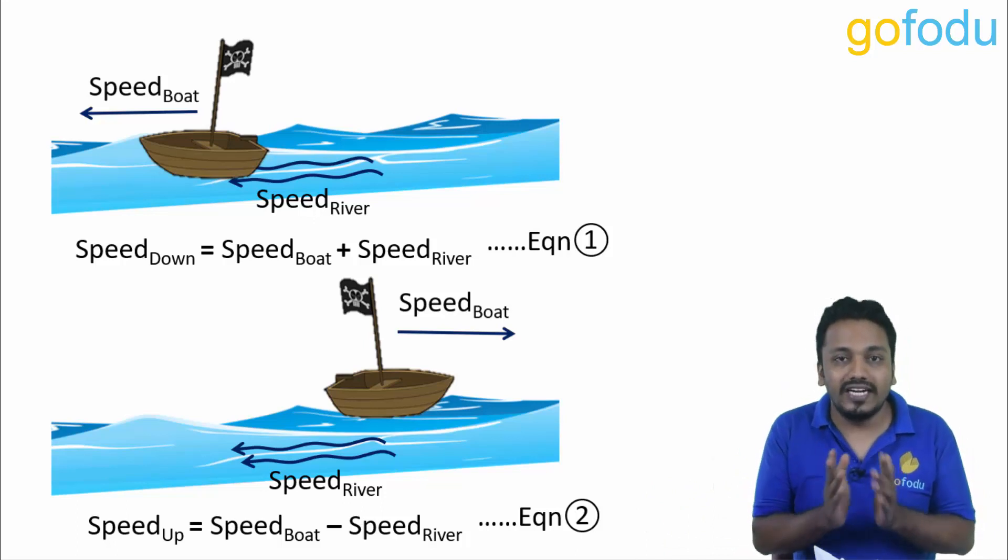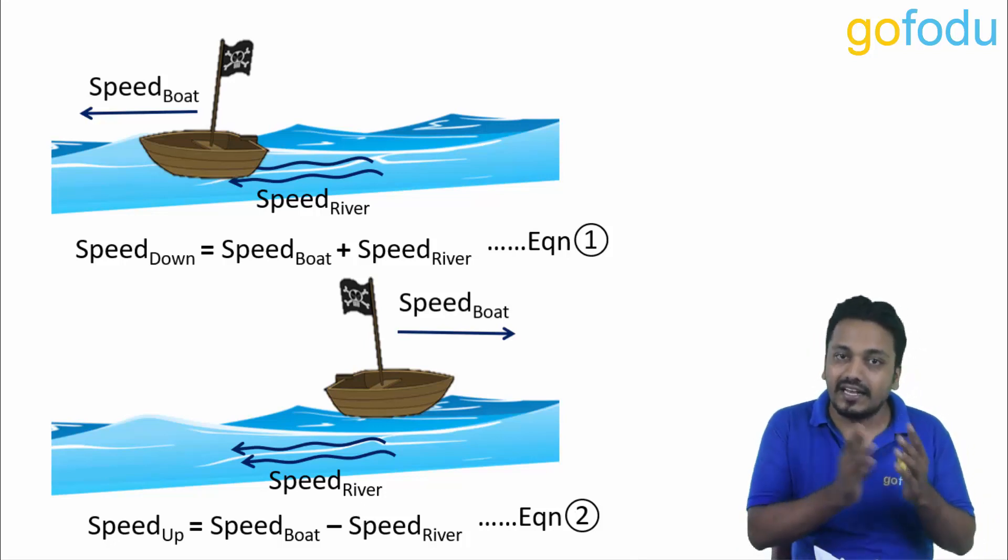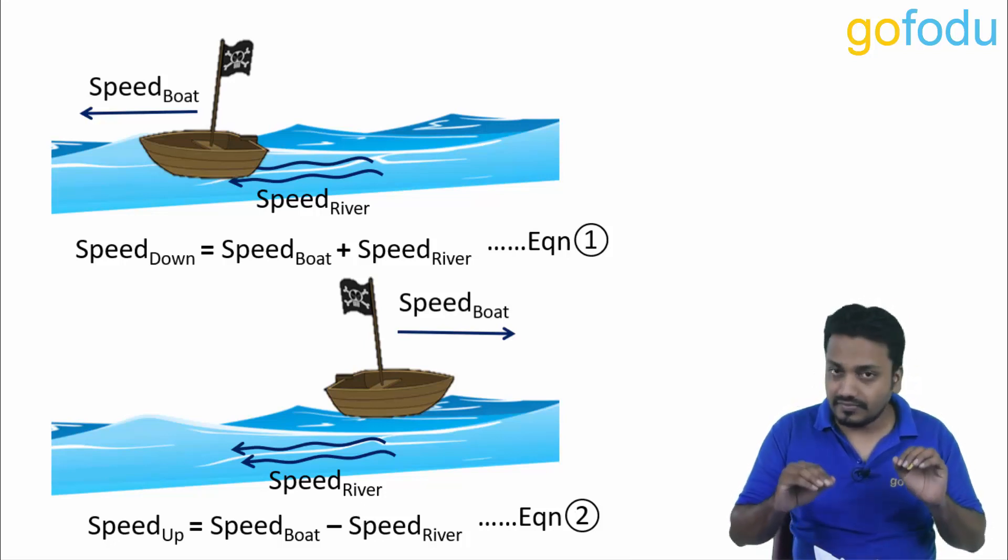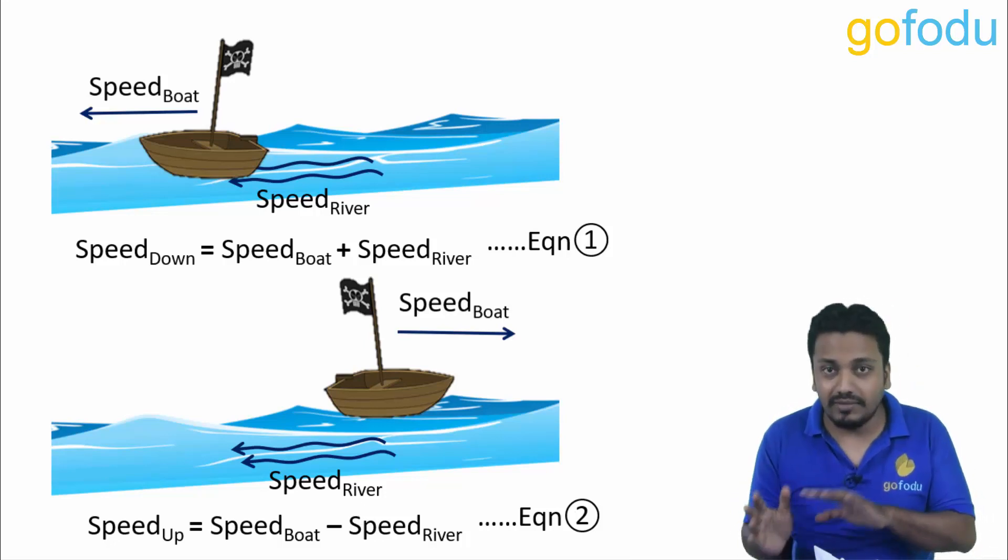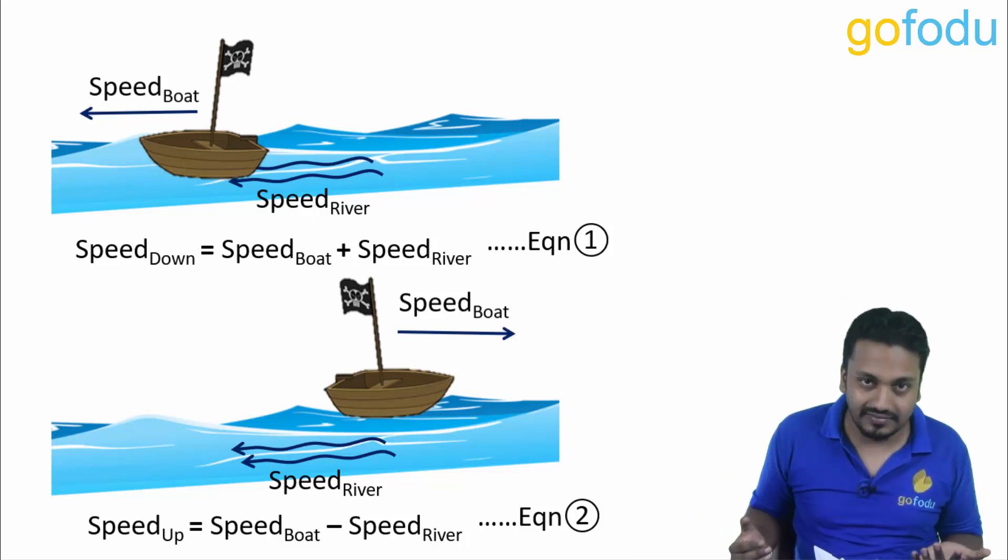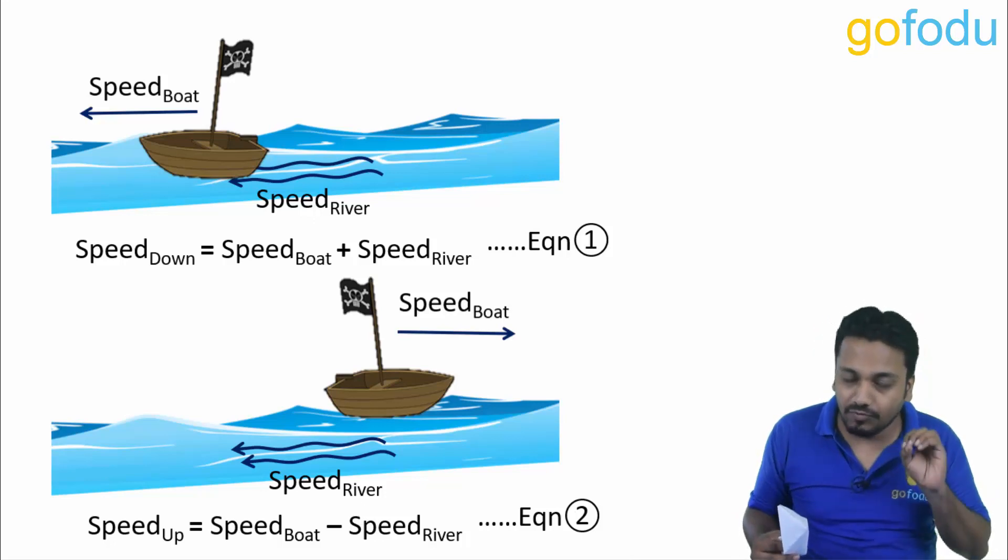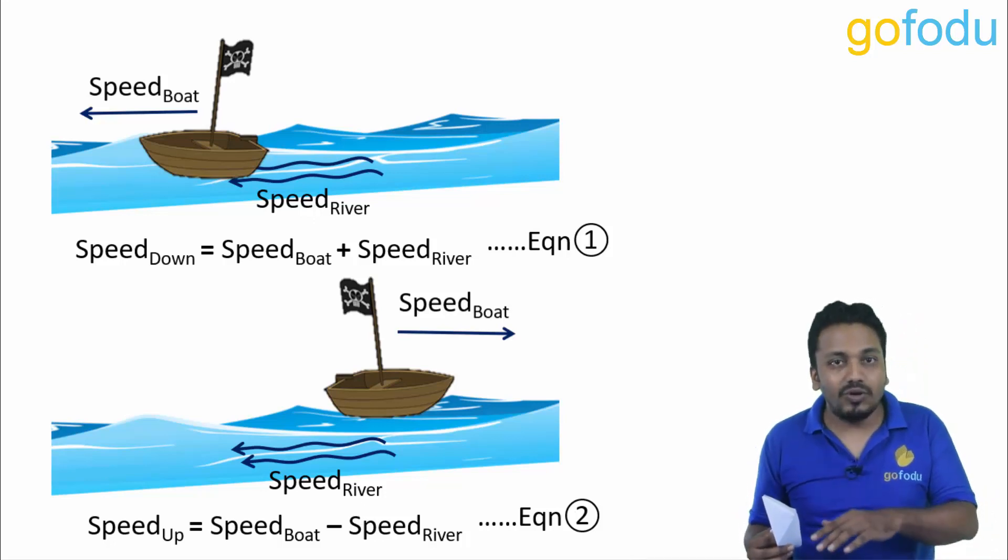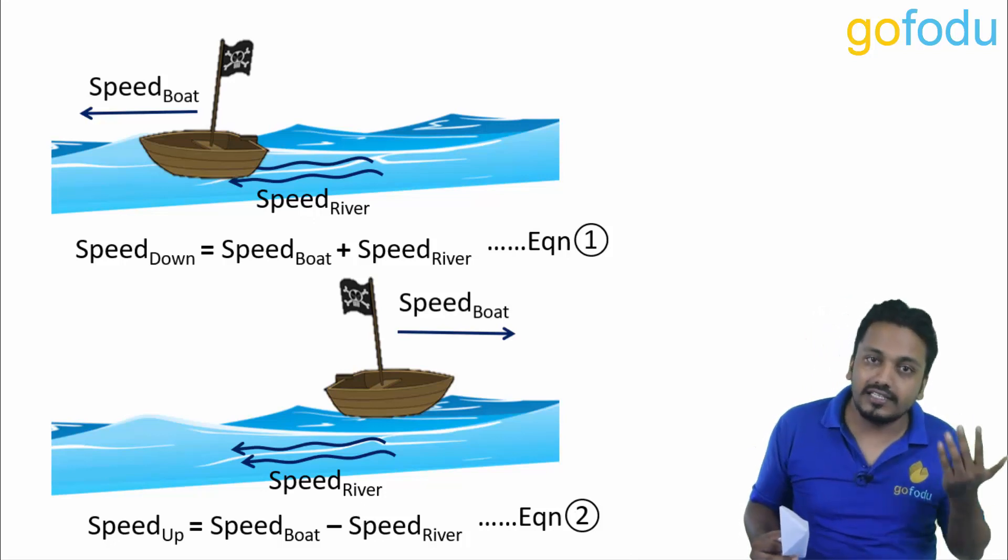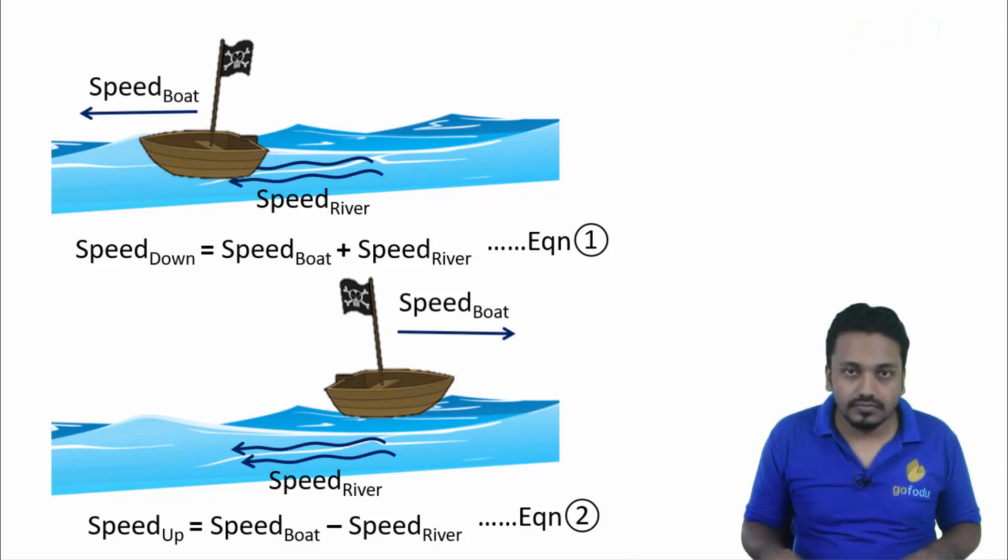These two equations one and two are all you need in this topic. While solving questions we will assume speed of boat and speed of river as sb and sr, and wherever we get speed downstream and speed upstream will replace them with sb plus sr and sb minus sr.